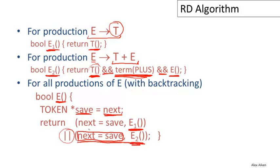One final note: the statement next equals save before trying the very first production is not strictly needed. We save the next pointer in the save variable, and then immediately copy it back. This is just for uniformity to make all productions look the same — since this is the very first production, we don't actually need that assignment statement.